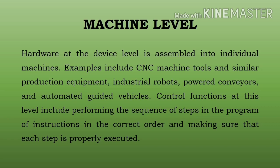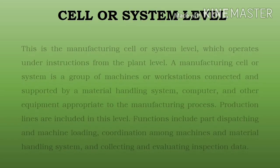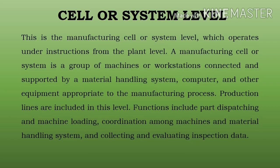Power conveyor ek roller conveyor hota hai jise power motor dwara chalaya jata hai; iska upyog parts ko ek jagah se doosri jagah le jaane ke liye kiya jata hai. Automated guided vehicle ek portable robot hota hai jiska upyog soft floor par material ko transport karne ke liye kiya jata hai.